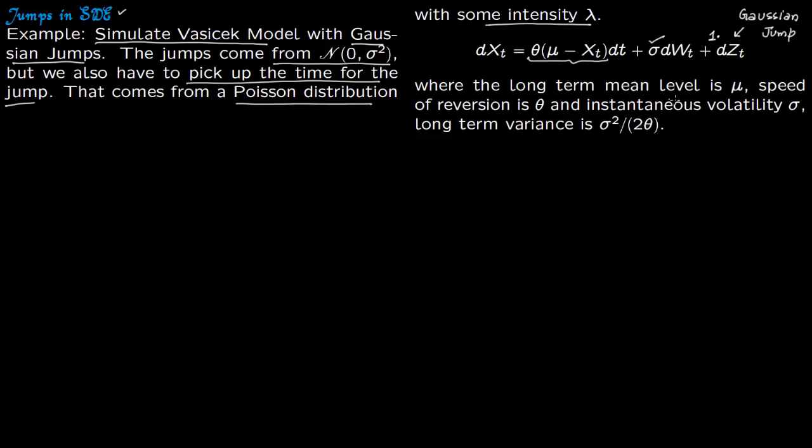The long term mean for this distribution is mu and speed of reversion is theta. Instantaneous volatility is sigma. This is same precisely as it was in Vasicek model. The only new thing we are adding is this Gaussian jump. You can control this jump by either controlling your normal distribution and controlling the jump coefficient or both.